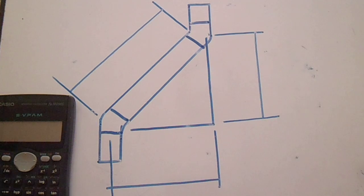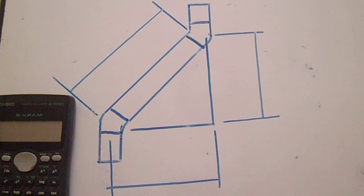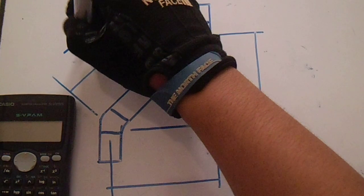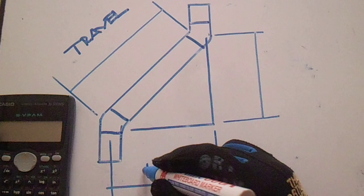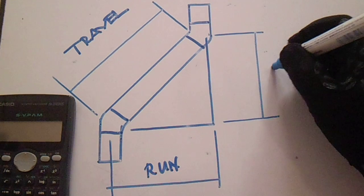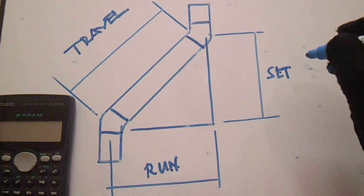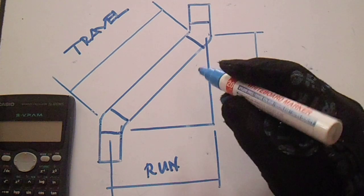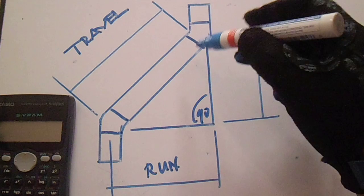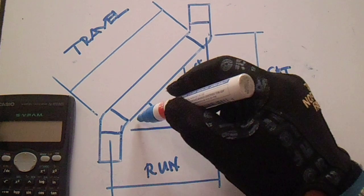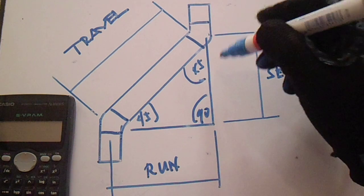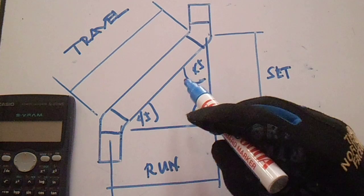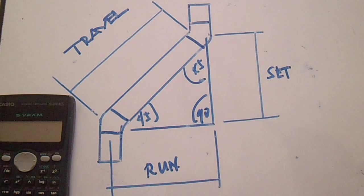So this is a simple offset. In this offset we have a travel, run, and set. So this is our travel, this is our run, and this is our set. We have 90 degrees, 45 degrees, and also 45 degrees — so we have a right triangle of 180 degrees.